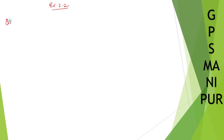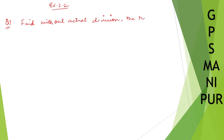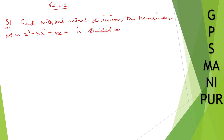Now we are doing Exercise 2.2 Question 1, Class 10 Math. The question is: find without actual division the remainder when x³ + 3x² + 3x + 1 is divided by (x - 1).